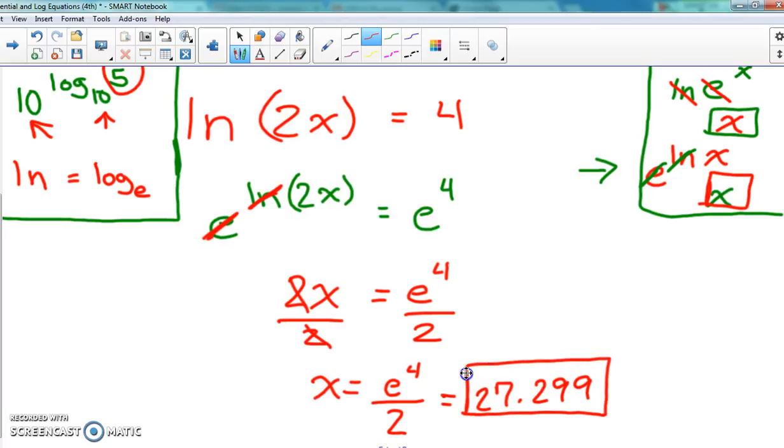27.299 - that works, and that's it. So again, we're trying to get rid of natural log, so we get natural log by itself, then use base e to cancel the natural log, and then solve for x. It should always be simple for these. Hopefully you understand that. If you don't understand something, call me over and I'll help you out. Next up is your practice.